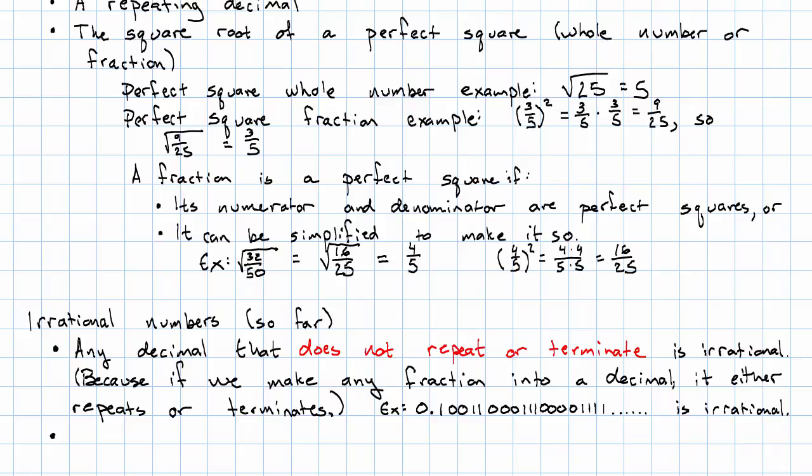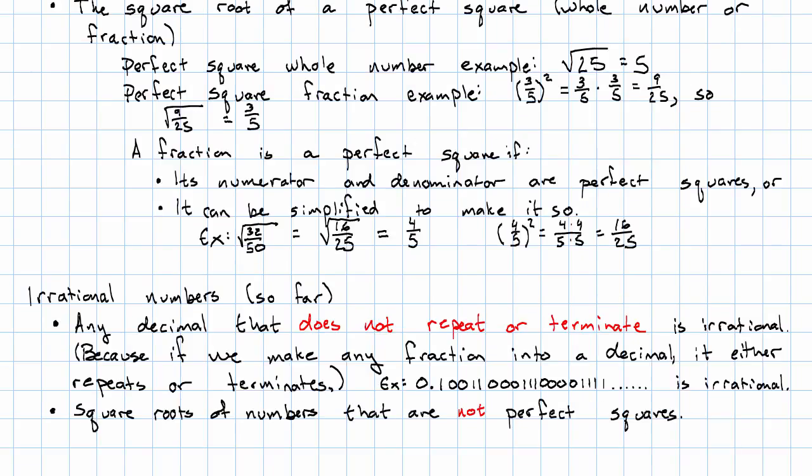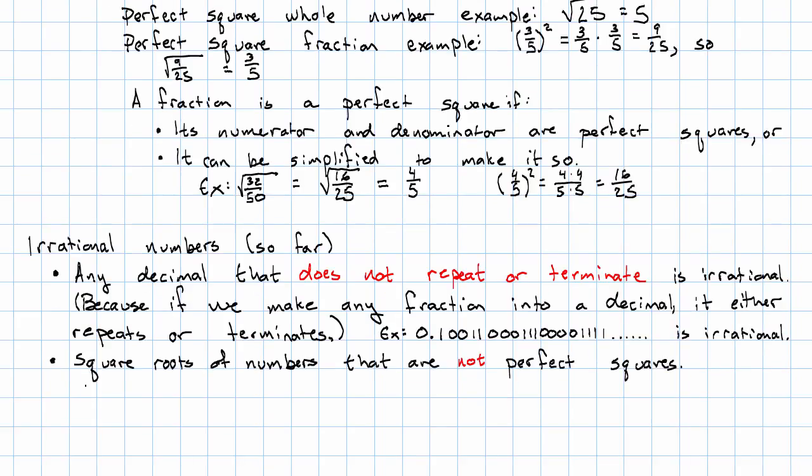The other irrational numbers we have available to us are square roots of numbers that are not perfect squares. So, for example, the square root of three. Or the square root of one seventh. Not perfect squares. Therefore, the square roots are irrational.